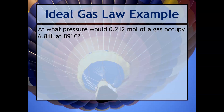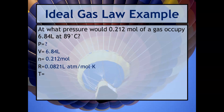Here's an example: at what pressure would 0.212 moles of gas occupy 6.84 liters at 89 degrees Celsius? Just like we always do, I'll list out all my variables. You can tell this is an ideal gas law problem because we're relating the amount of gas in moles. We're solving for pressure; we have volume, moles, R is constant, and we'll add 273 to convert the temperature to Kelvin.